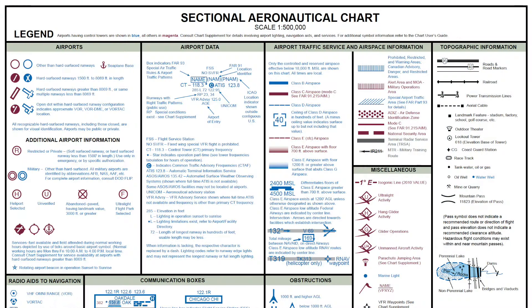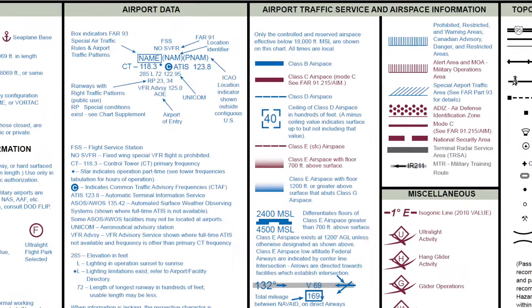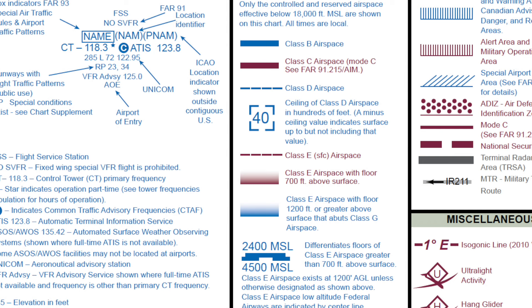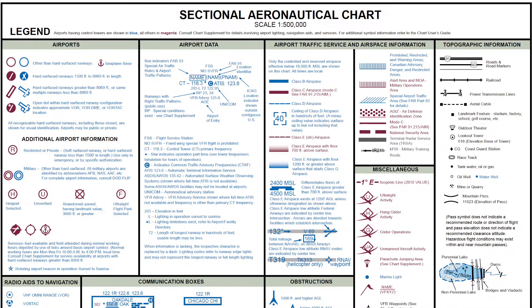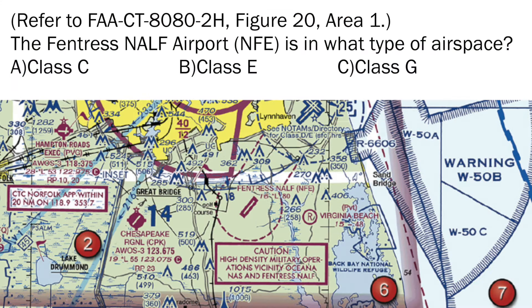You should immediately identify that dashed magenta line as Class E airspace that goes down to the surface. If you want to verify, use the aeronautical chart legend in the beginning of the test booklet — in the airspace information section, the dashed magenta line indicates Class E surface airspace. Don't forget about this legend; it will help you with a lot of questions. It is not Class C because Fentress is outside that ring, and not Class G because that dashed magenta line means Class E starts at the surface. Class E is the correct answer.